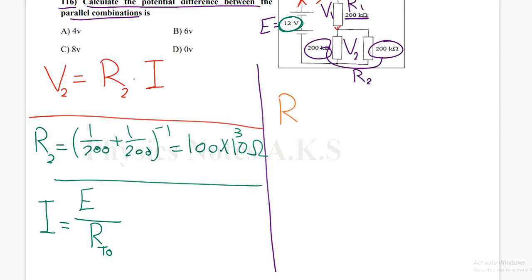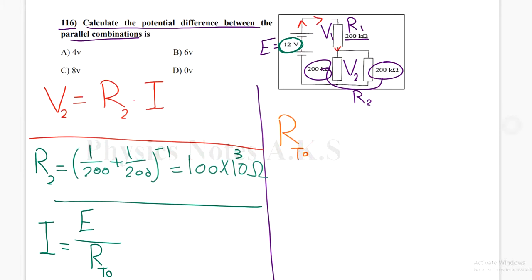So R total, it's actually the total resistance of this one and this one. Since R1 and R2 are connected in series, it is going to be R1 plus R2.